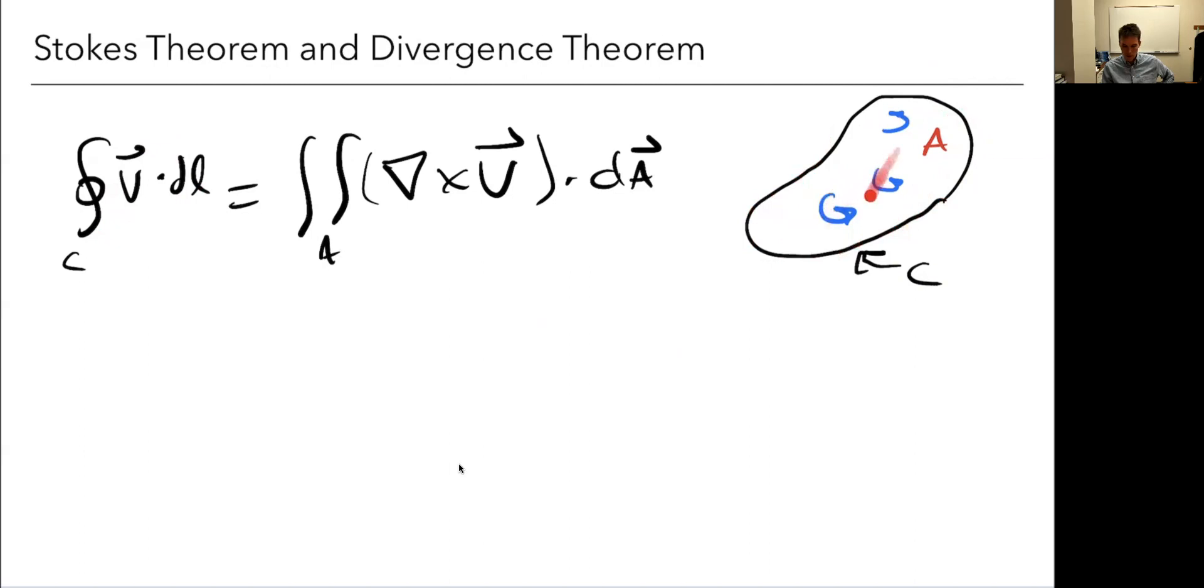One way to think about it conceptually is that all the rotations are going to cancel out on the inside, except for on the boundary, because there's nothing else to cancel on that side. So all that matters is on the boundary. That may or may not help you, but just one way to think of it.